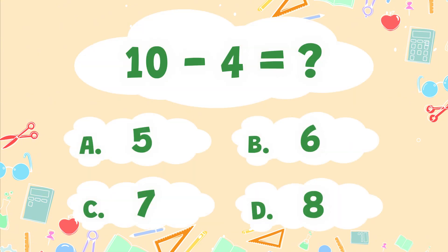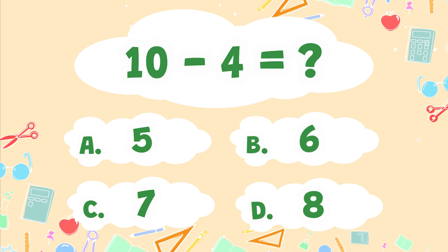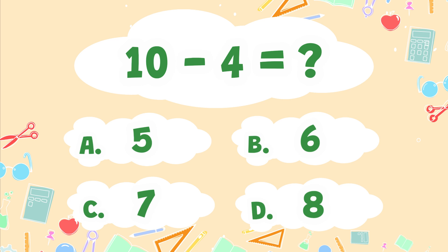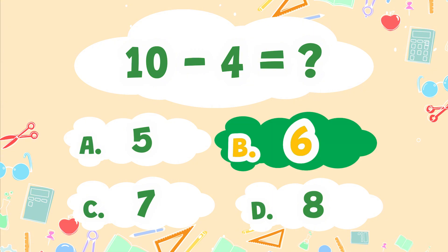What is 10 minus 4? A. 5, B. 6, C. 7, D. 8. The correct answer is B. 6.